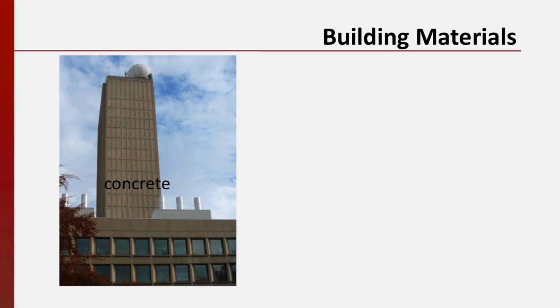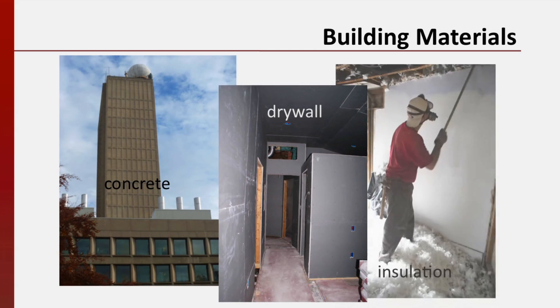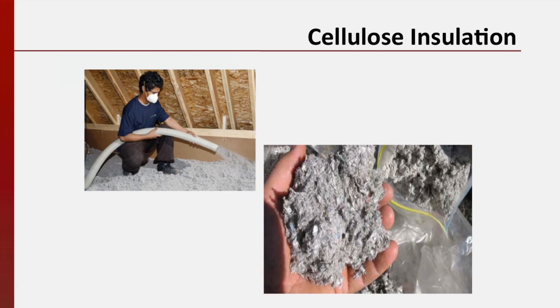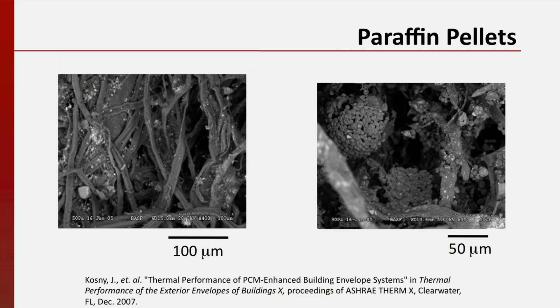Some ordinary building materials such as concrete, drywall, or insulation have been specially engineered over the past 50 years to contain microscopic pellets of these phase change materials. Cellulose insulation, shown here, is commonly used to insulate attics and walls. Researchers at the Oak Ridge National Laboratories have impregnated small paraffin pellets in this common type of insulation to increase its performance. Because these pellets are microscopic, the phase change insulation looks exactly like ordinary insulation to the naked eye. However, under a scanning electron microscope, the clusters of paraffinic pellets are easy to spot.